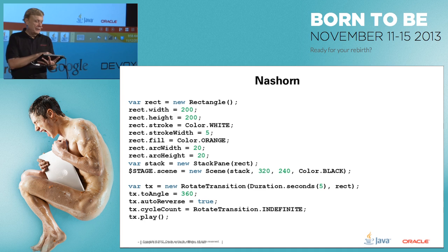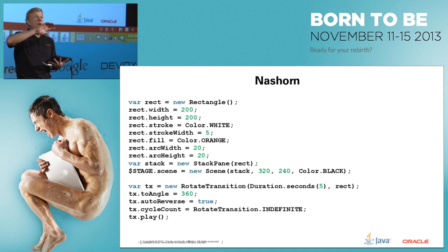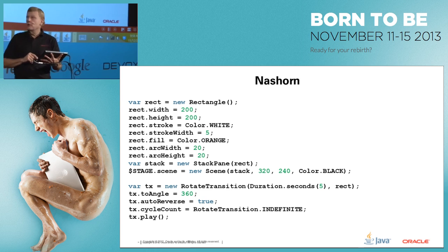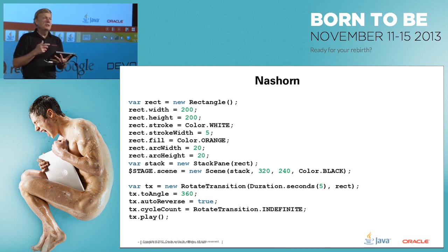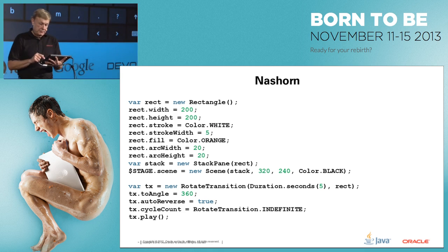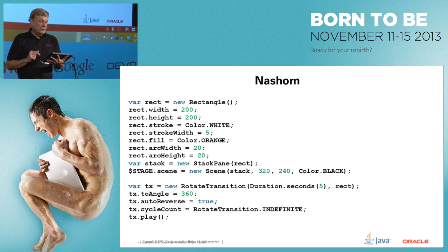We set autoReverse to true, cycle count to indefinite, and play it. To invoke it from the command line, use 'jjs' — the command-line version to invoke Nashorn — with the '-fx' flag, which brings in the FX runtime, then give it the name of the JavaScript file. Executing that opens a window running the JavaScript with the JavaFX libraries.